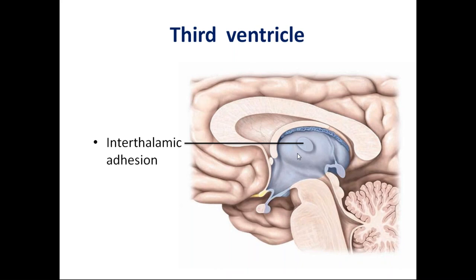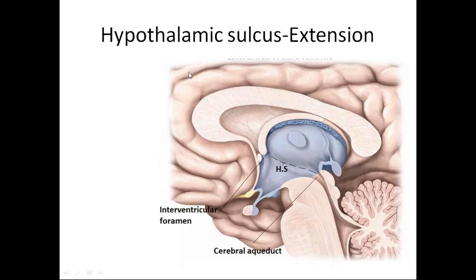In the next slide, you can see a sulcus extending from the interventricular foramen to the cerebral aqueduct — this is the hypothalamic sulcus. It divides the diencephalon into pars ventralis, which consists of the hypothalamus and subthalamus, and pars dorsalis, which consists of the thalamus, epithalamus, and metathalamus. The pineal gland is also visible here.